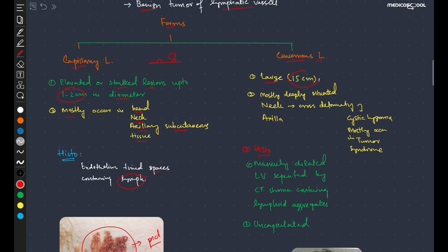Cavernous lymphangioma is about 15 centimeters in diameter and is mostly deeply situated, for example in the neck region where it can produce gross deformity. It is called cystic hygroma and mostly occurs in Turner syndrome.